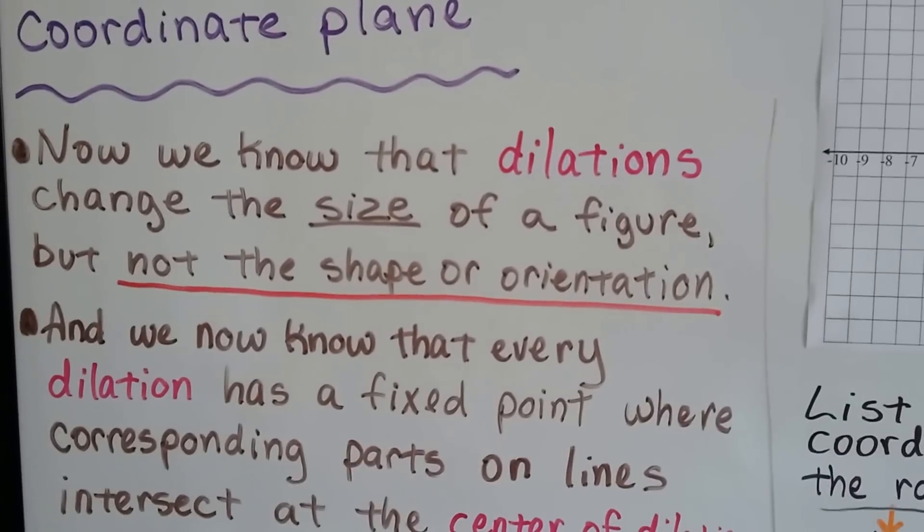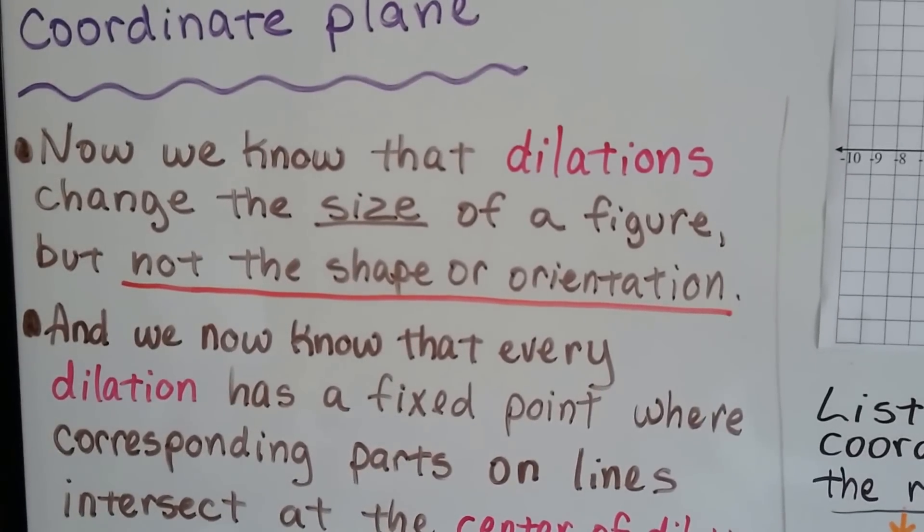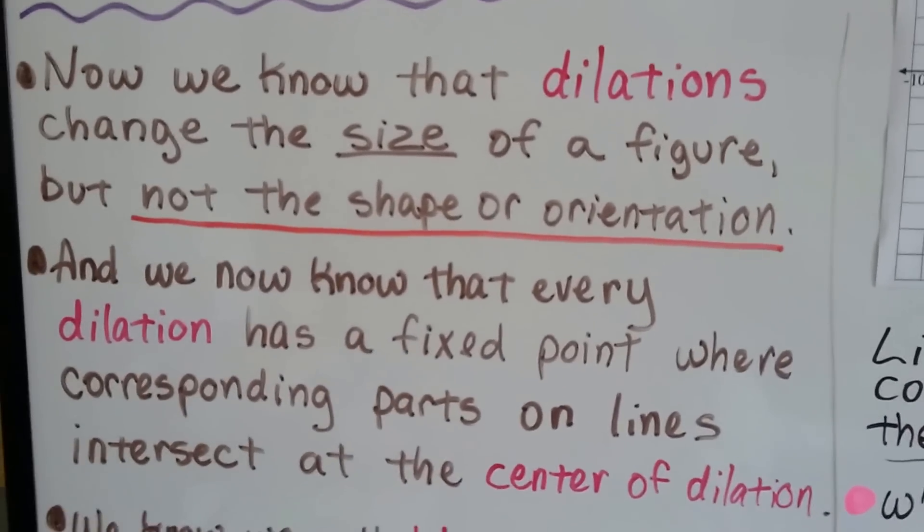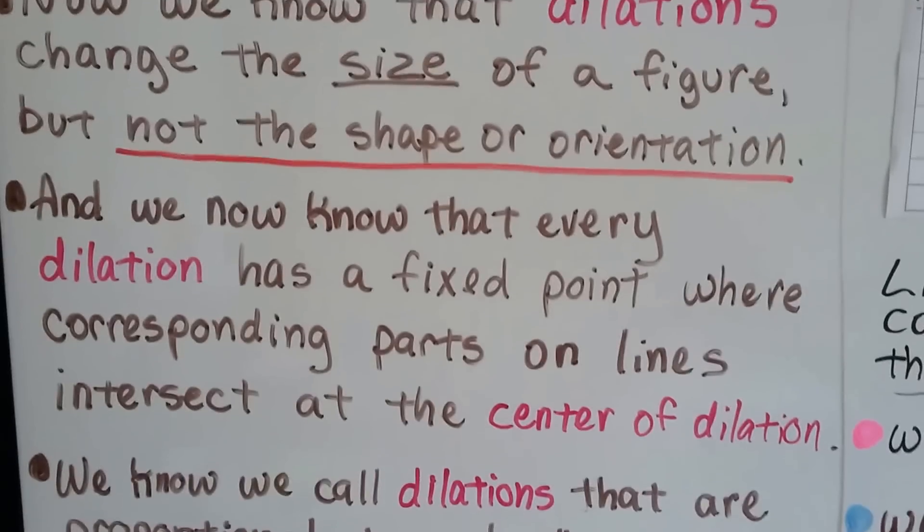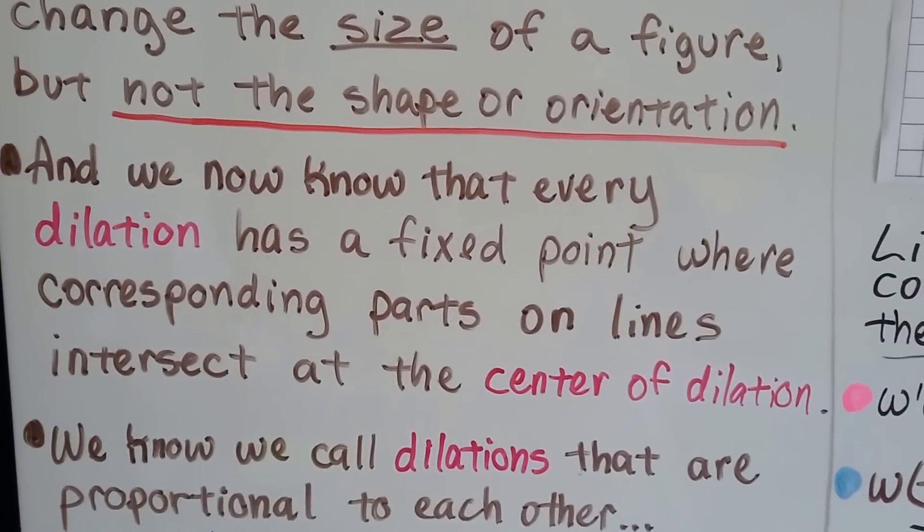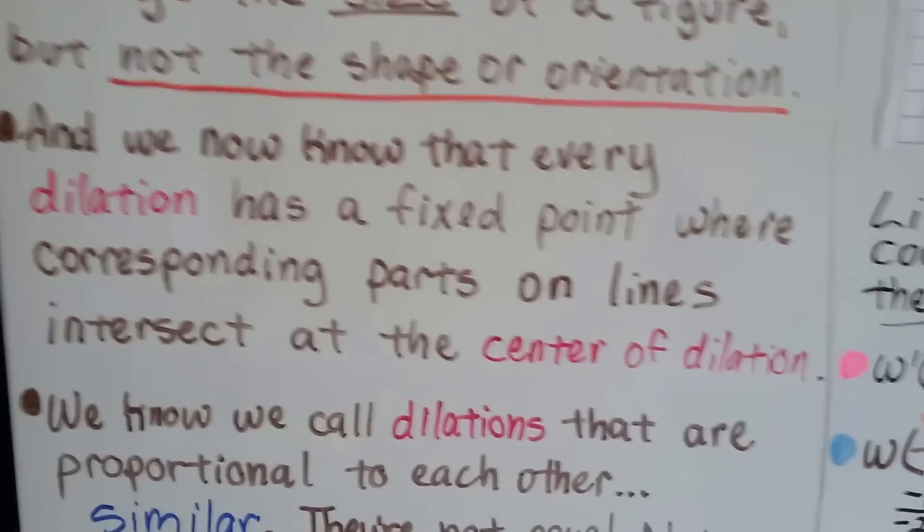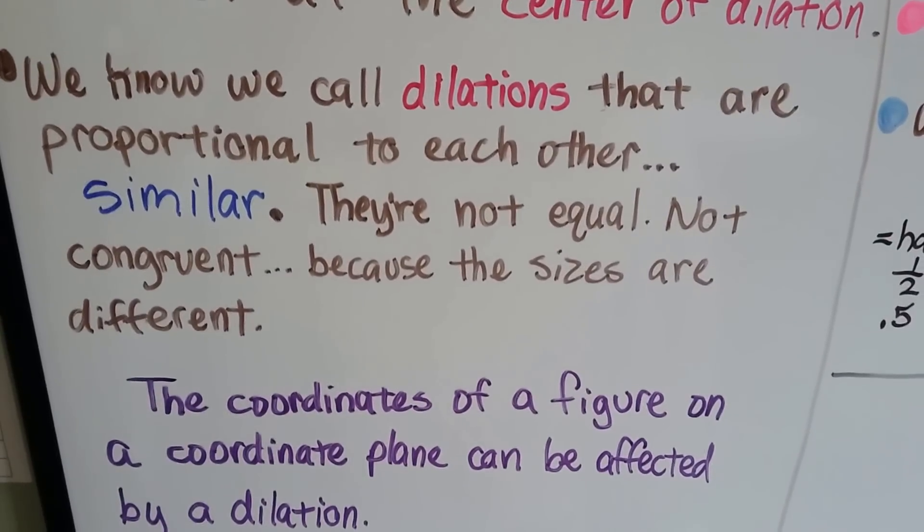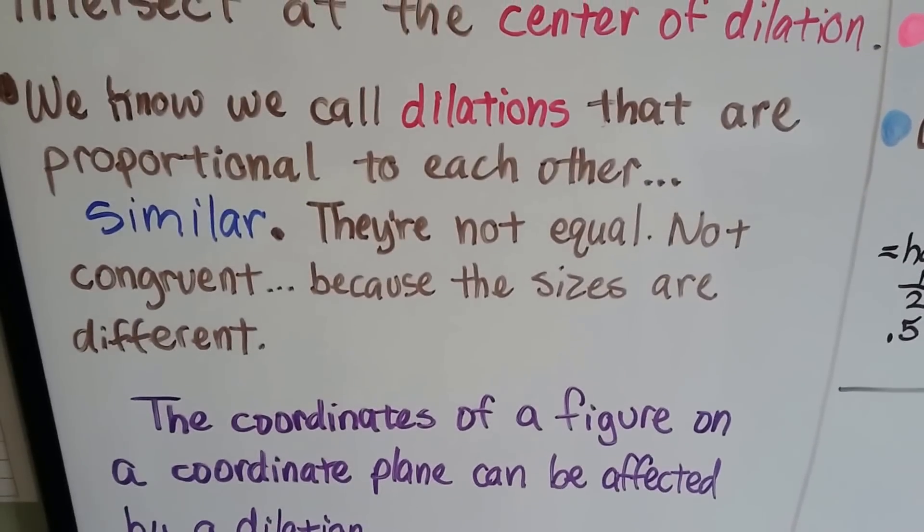We now know that dilations change the size of a figure, but not the shape or orientation. And we now know that every dilation has a fixed point where corresponding parts on lines intersect at the center of dilation. We know we call dilations that are proportional to each other similar.